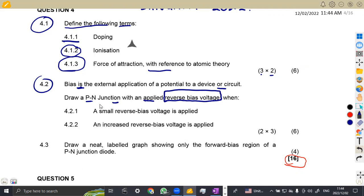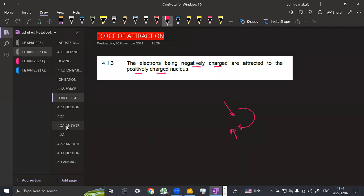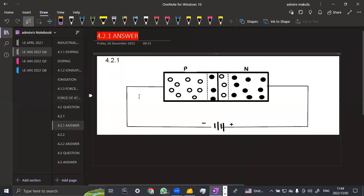That is a reverse. But the first one is supposed to be a small reverse bias voltage. When just a small voltage is applied, how does the diagram look like? So that is what we have on 4.2.1. When a small bias is being applied.